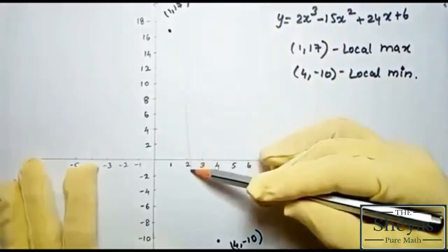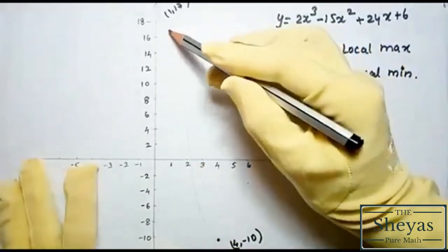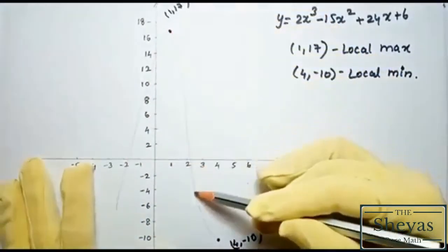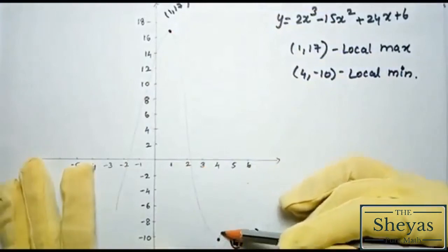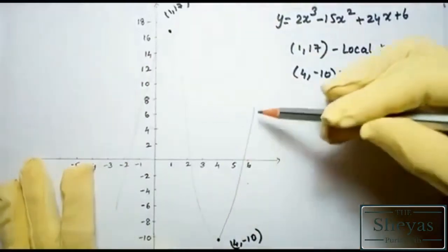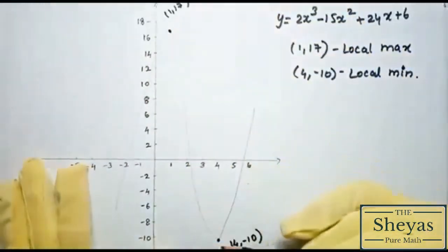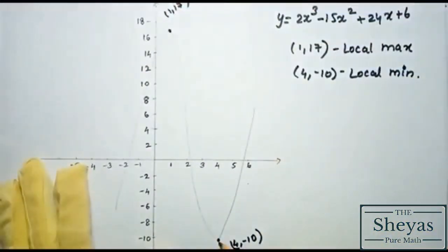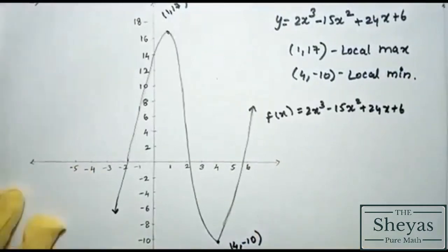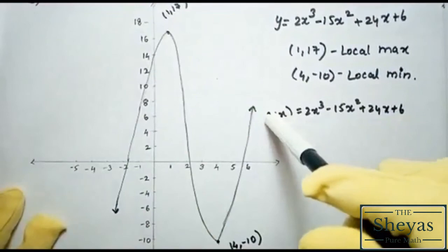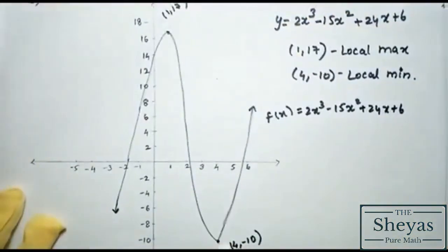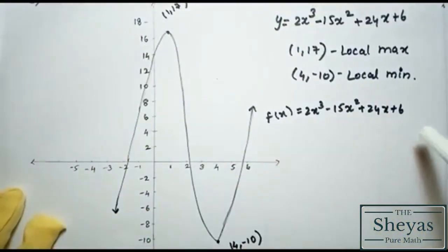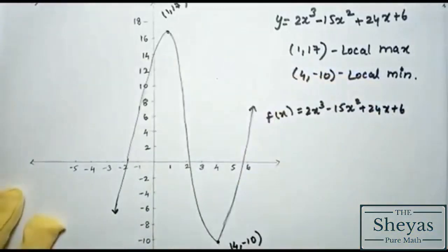Joining these points, the graph rises to the local maximum at (1, 17), then falls to the local minimum at (4, −10), forming the characteristic cubic shape. This is the graph of y = 2x³ − 15x² + 24x + 6, with local maximum and local minimum points clearly marked.